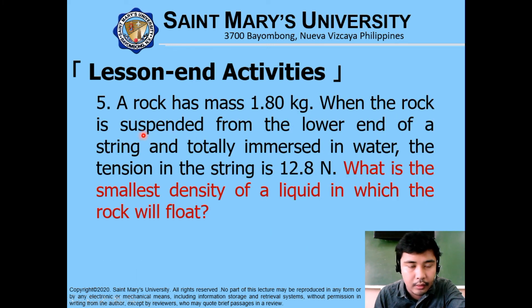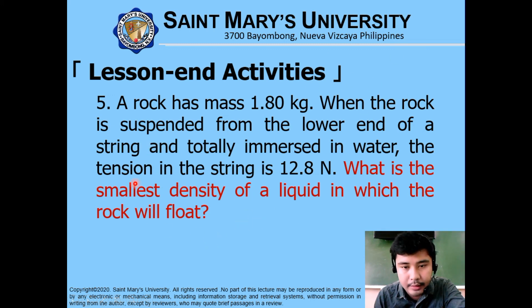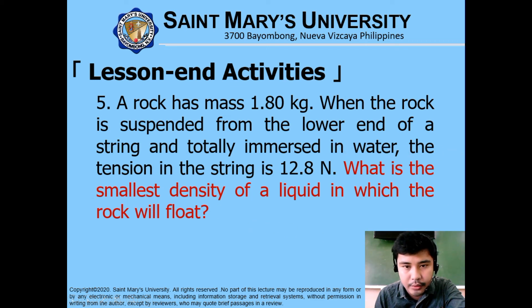The last problem: a rock has a mass of 1.8 kg. When suspended from a string and totally immersed in water, the tension in the string is 12.8 N. What is the smallest density of a liquid in which the rock will float? This requires computing buoyancy in relation to density. This formally ends our presentation for today.